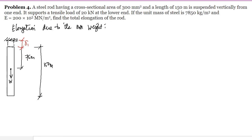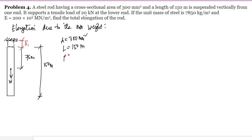Using the formula for elongation due to its own weight, the given values are: cross-sectional area = 300 mm², length L = 150 m, and the load will be computed separately as it gives a separate elongation. The unit mass density is 7850 kg/m³.